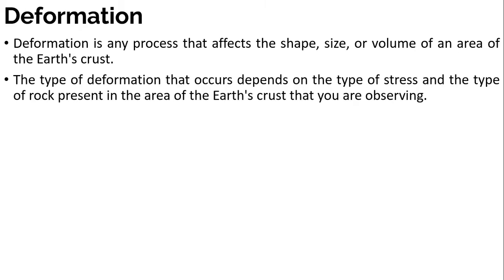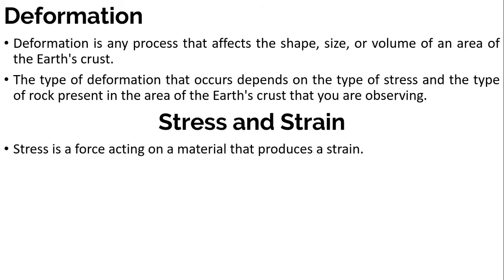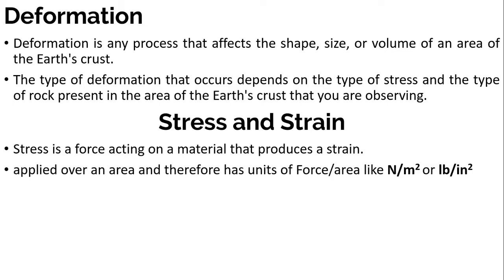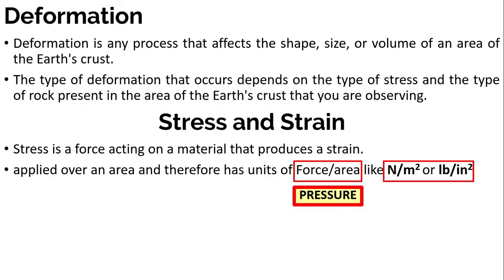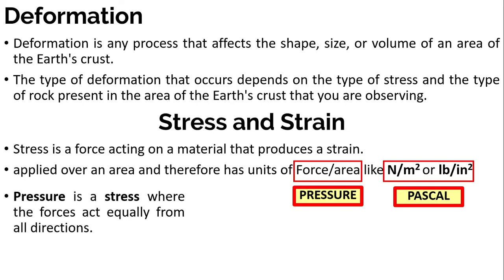The type of deformation that occurs depends on the type of stress and the type of rock present. Stress is a force acting on a material that produces a strain, and strain is the change in shape or volume of the rock that experienced stress. Stress is applied over an area and has units of force over area like newton per meter squared or pounds per inch squared — which is the SI unit of pressure, the pascal. Pressure is a stress where forces act equally from all directions, which we call confining stress.